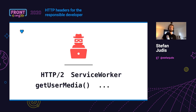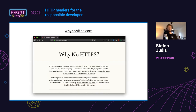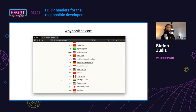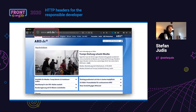Browser vendors push new cutting-edge features to only be available over HTTPS — like HTTP/2, service workers, or getUserMedia. I've been shipping HTTPS for several years now. You can go to a website like 'why no HTTPS' — it's not 100% accurate anymore, but you'll find big sites that in 2020 still don't ship HTTPS. For example, the ARD, which is a massive German news organization, is not shipping HTTPS by default. I think this is very surprising and we can do better.